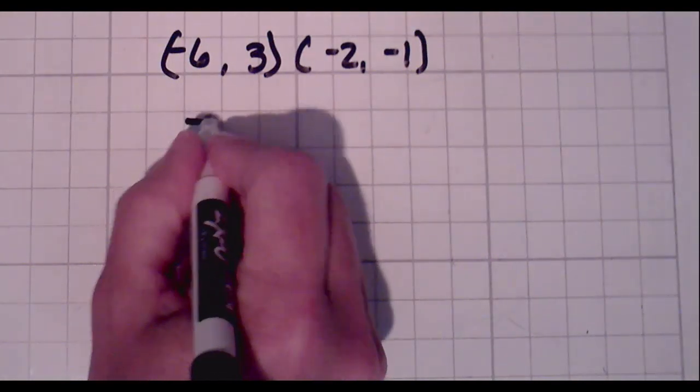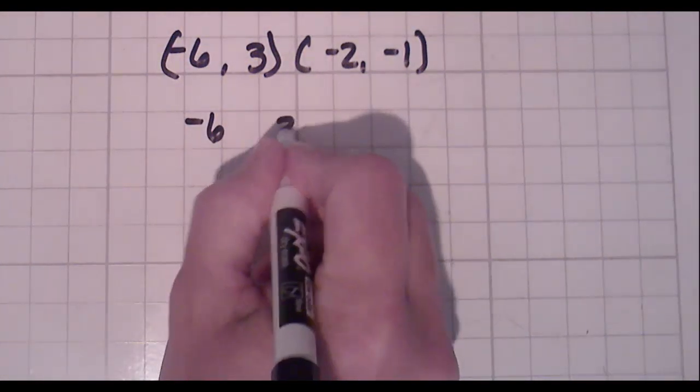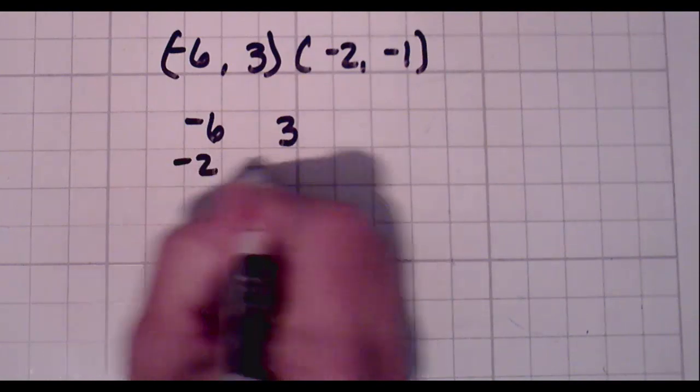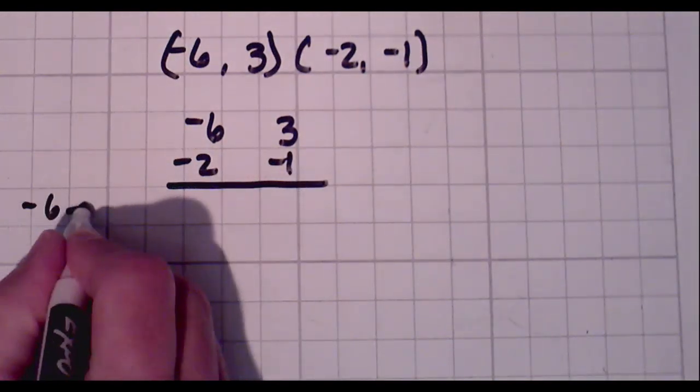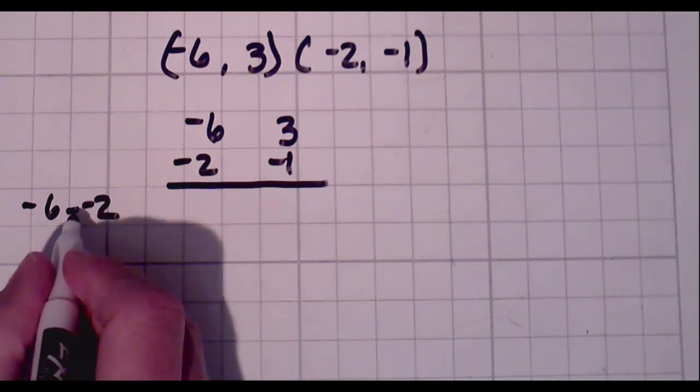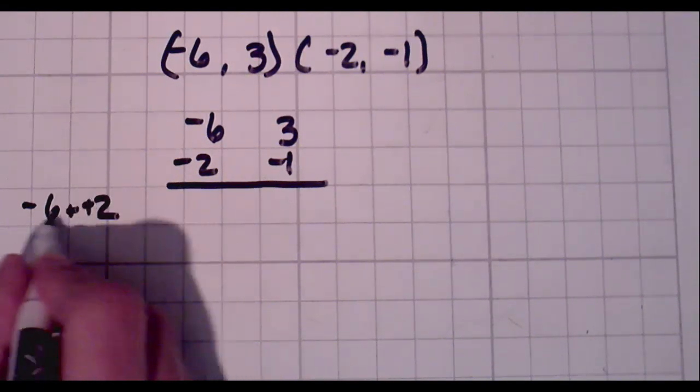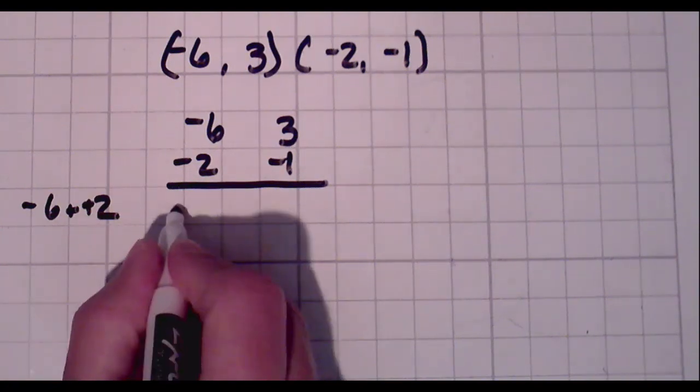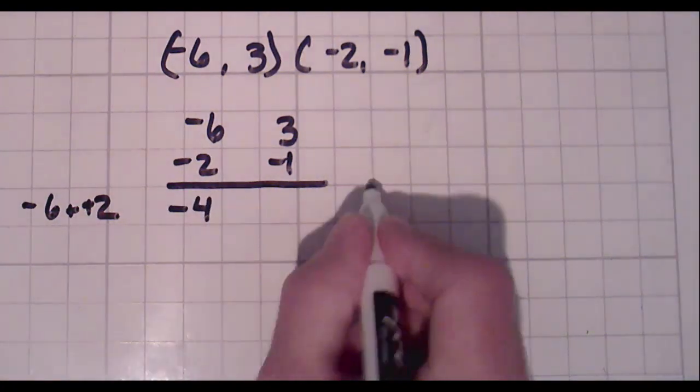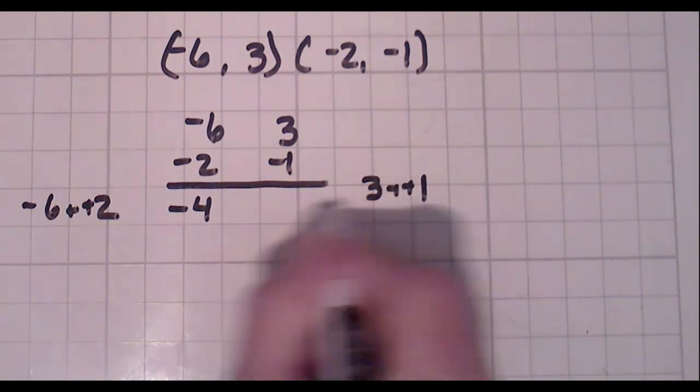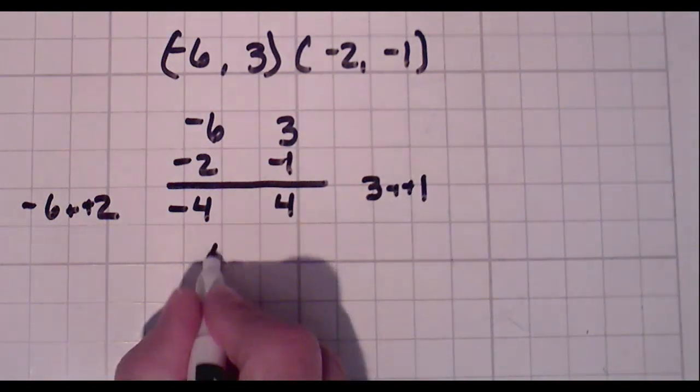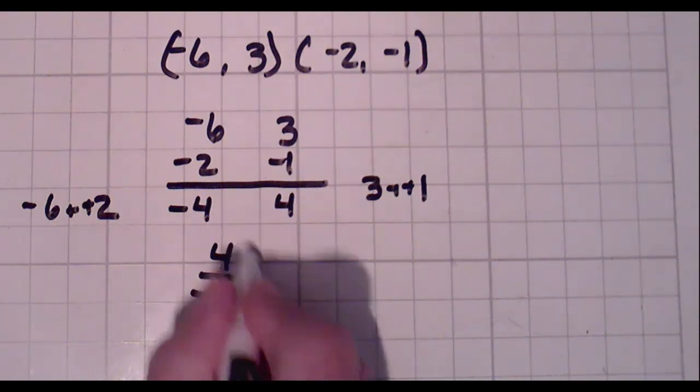So we're going to do negative 6, 3, negative 2, negative 1. Negative 6 minus negative 2. Two negatives in a row. So I'm going to change that to a positive. Negative 6 plus 2 is negative 4. 3 minus negative 1 becomes 3 plus 1. That's a 4. Second number over first number.